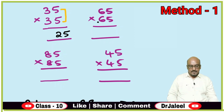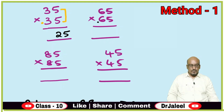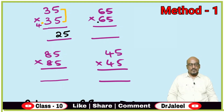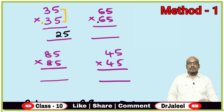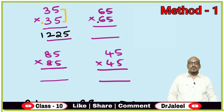Then, on the left side, the tens digit 3 is found. You increase 1 there, so 3 plus 1 becomes 4. Now 4 into 3 is 12. You can write 12 directly, so the answer is 1225.